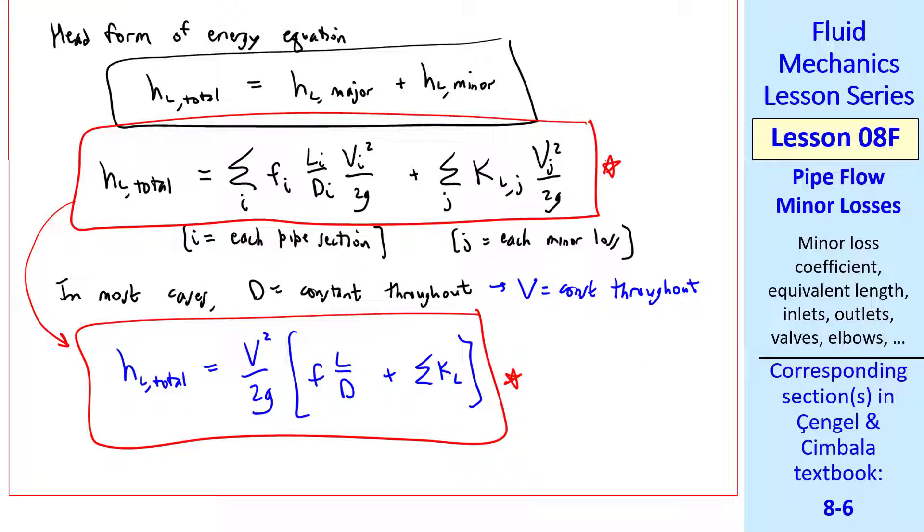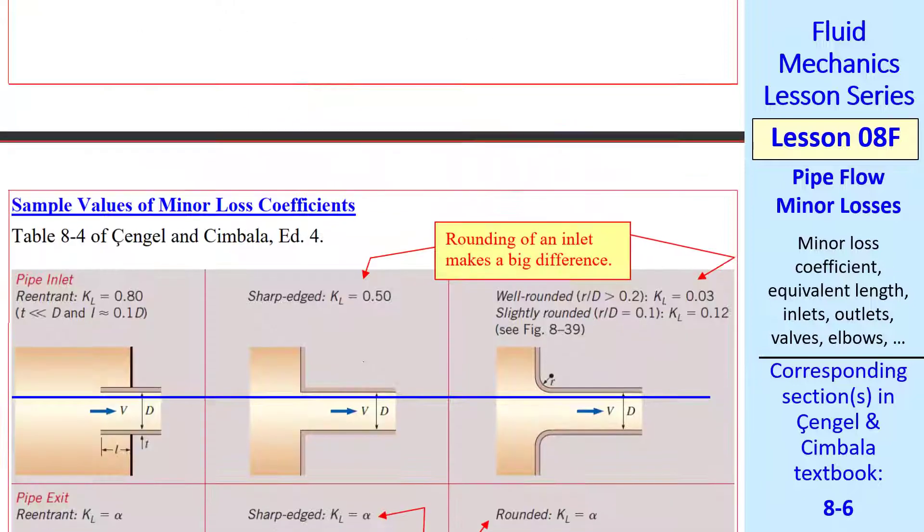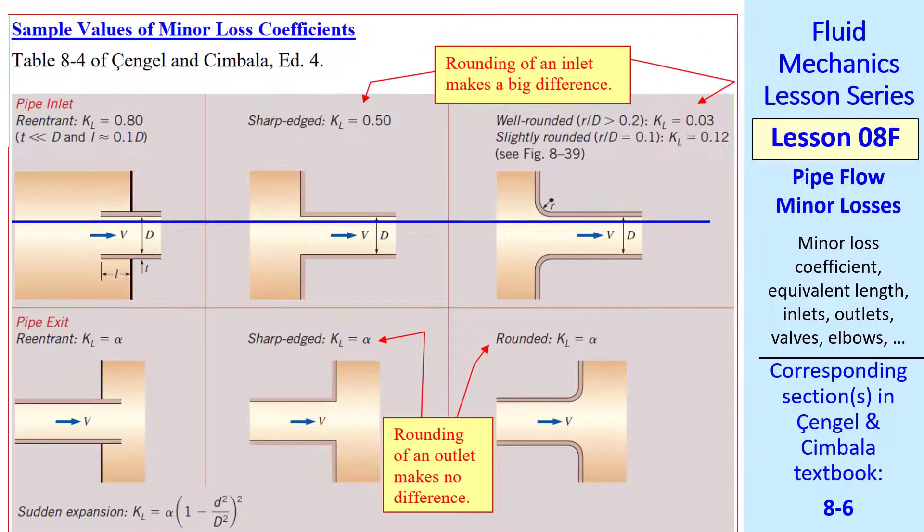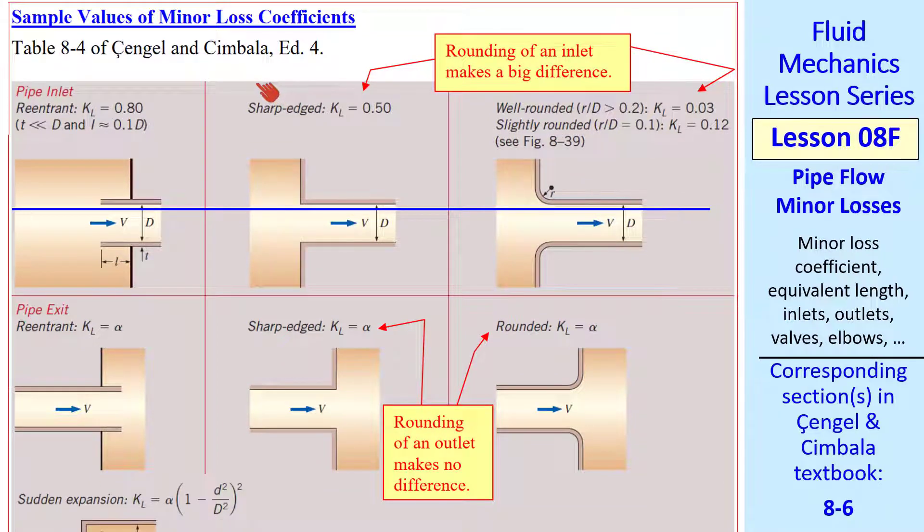Here are some sample values of minor loss coefficients from the Cengel-Cimbala textbook, and there are other publications that give KL for various minor losses. Here we show three different types of pipe inlet. A re-entrant pipe inlet, where KL is about 0.8. A sharp-edged inlet, where KL is about 0.5. And a well-rounded inlet, where KL can be greatly reduced, depending on how much rounding.